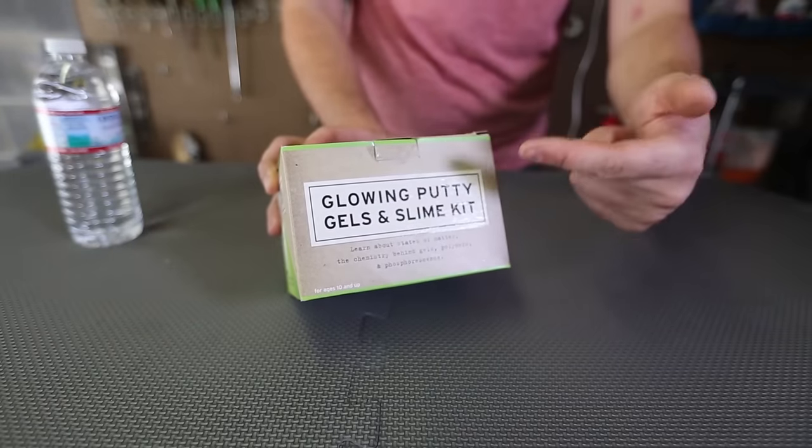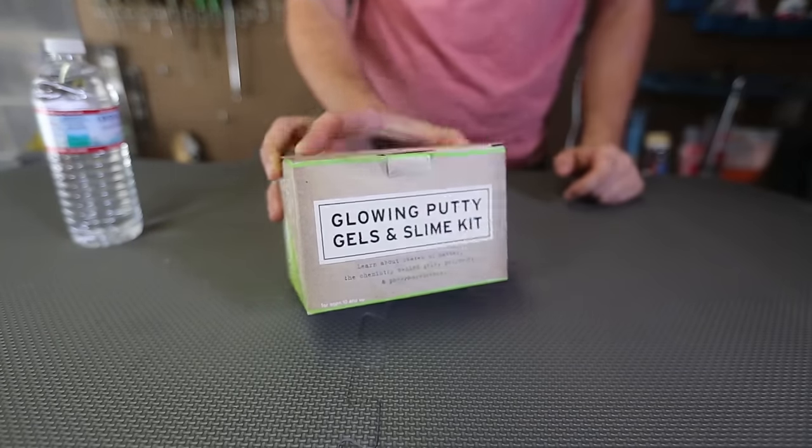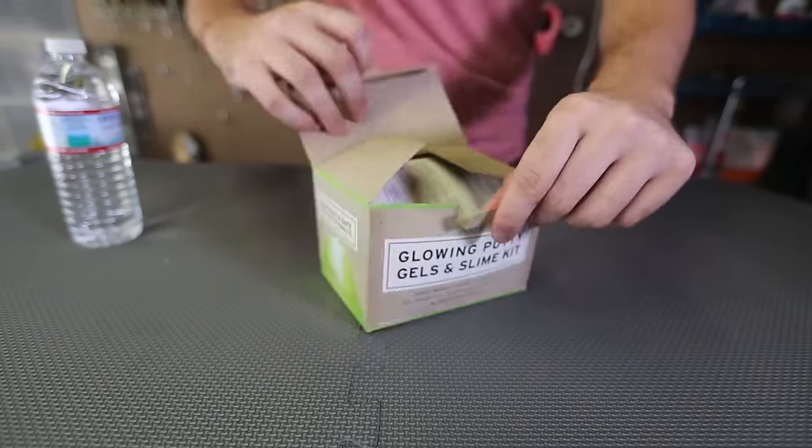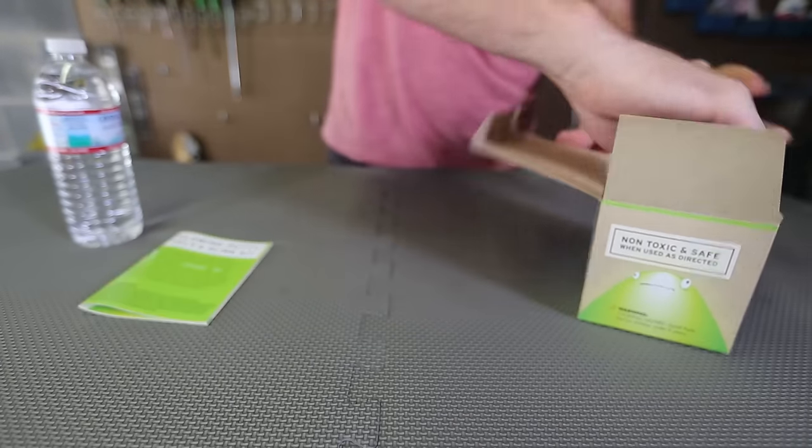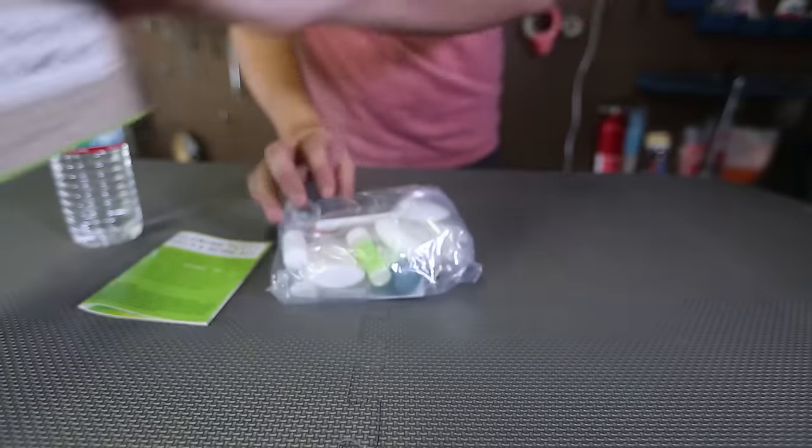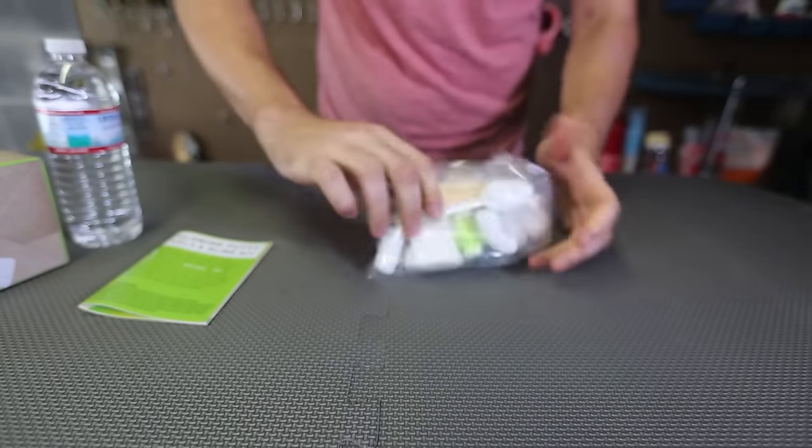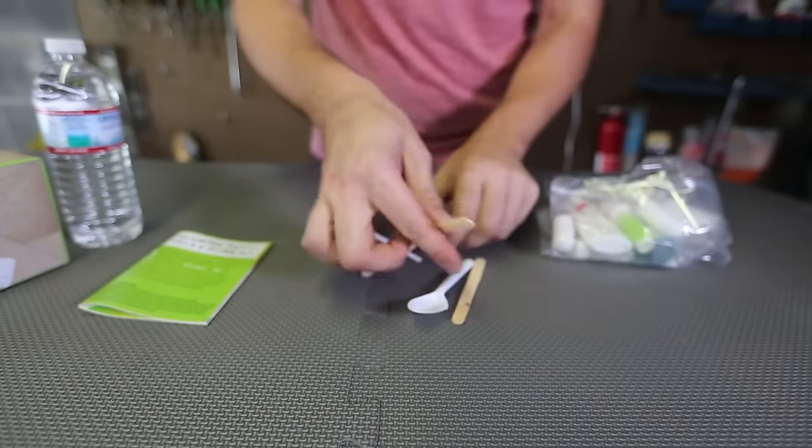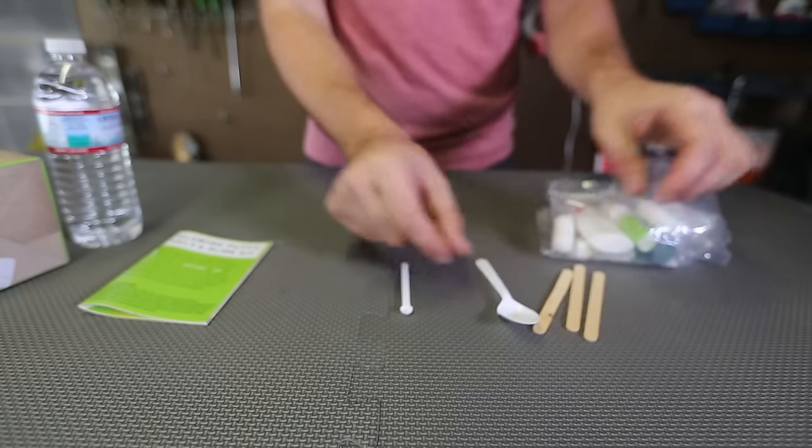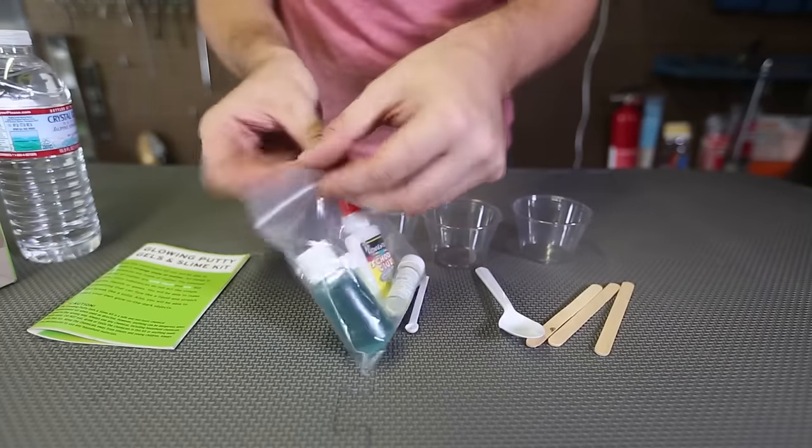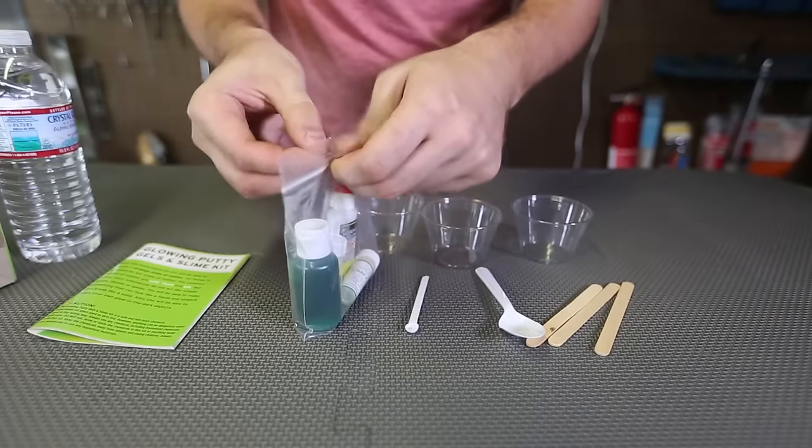So we got here glowing putty, gel and slime kit. Let's check it out what it's all about. Here's a little book with all the experiments, how to do them and all the other good stuff over here. Packaged pretty well. Mixing sticks, teaspoon and a mini spoon right here. So it came with three cups and let's open these ones up.